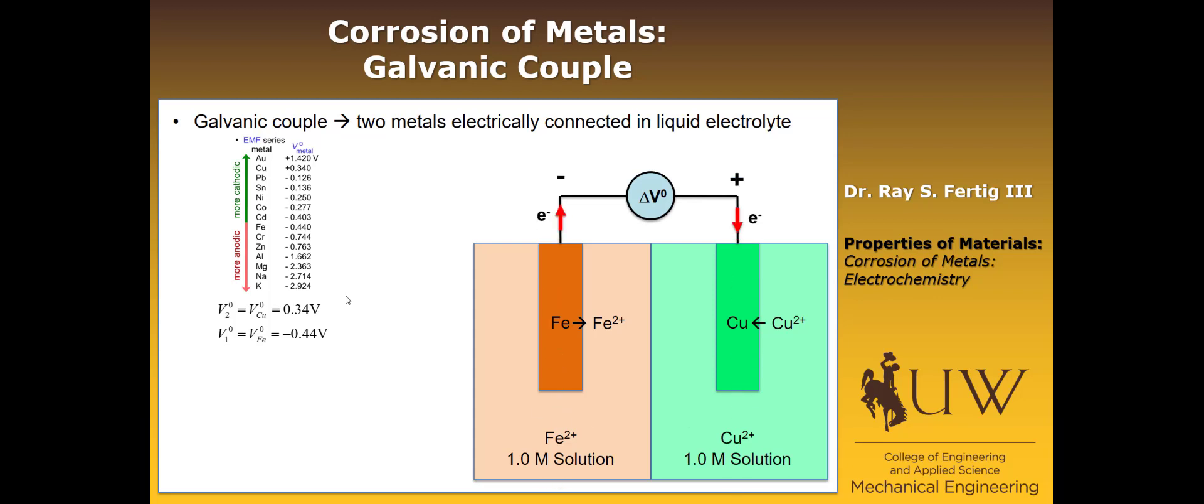We now know that the lower the V0 value, the easier to produce electrons, the easier to oxidize. So we can now draw the direction that our electrons are going to flow. Because it's easier to oxidize the iron and harder to oxidize the copper, we're going to flow electrons from the iron into the copper. We can define the plus and minus side of this electrode and label the anode and the cathode. Remember, the anode is where oxidation happens, the cathode is where reduction happens. We can also describe the total potential of this electrode as delta V0, which is just the difference between the V0 values from the EMF series. In this case, the potential is 0.78 volts.